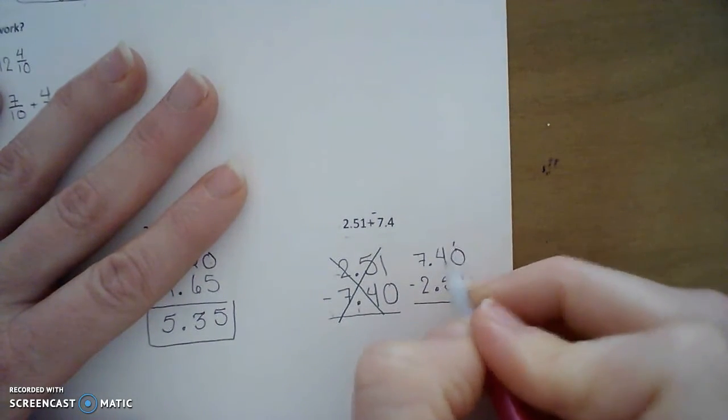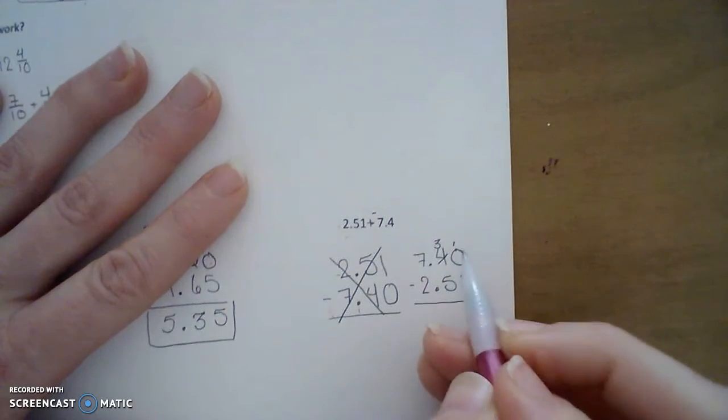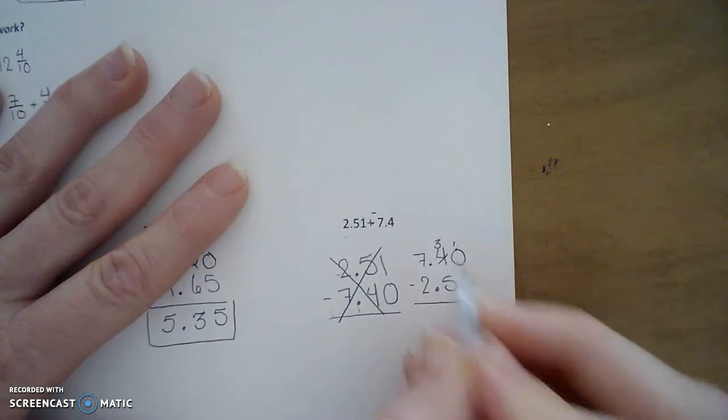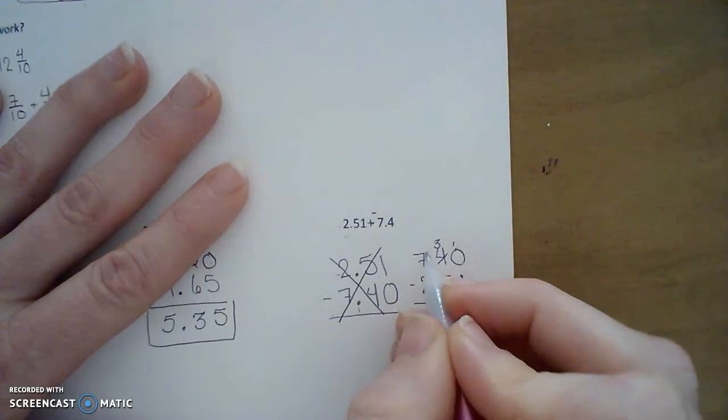All right. When we subtract, we're going to need to regroup. All right. Ten take away one is nine. Three take away five. I will have to regroup again.